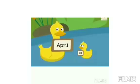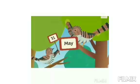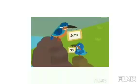The fourth month of the year is April. It has 30 days. The fifth month is May. It has 31 days. The sixth month is June. It has 30 days.